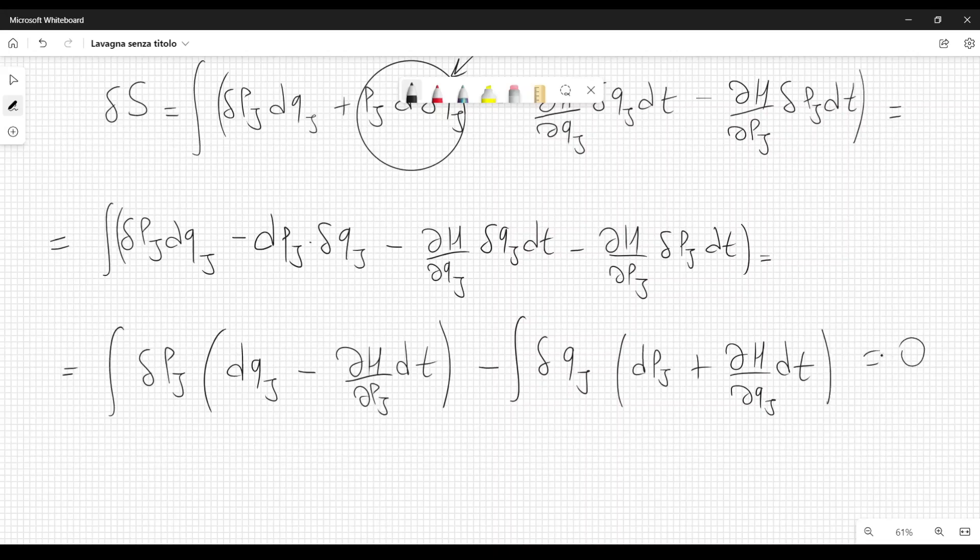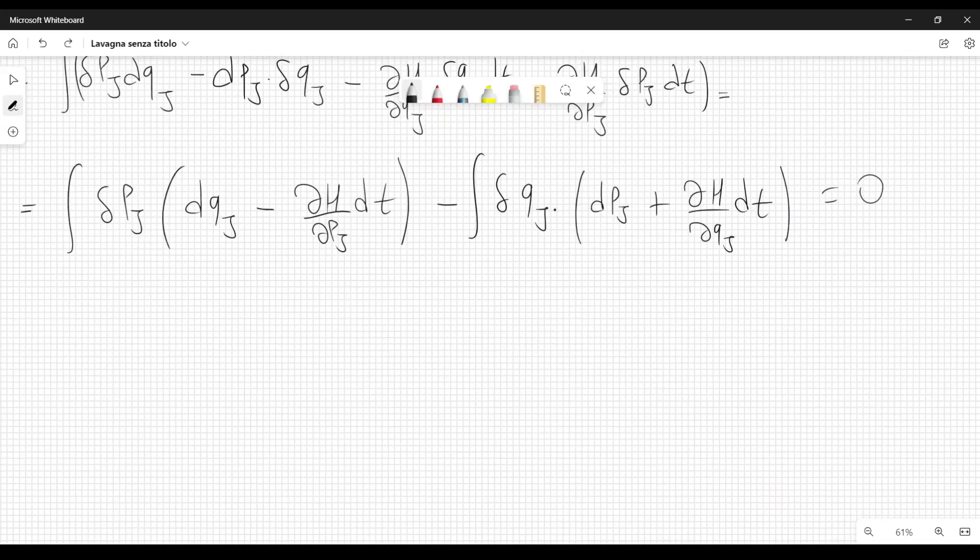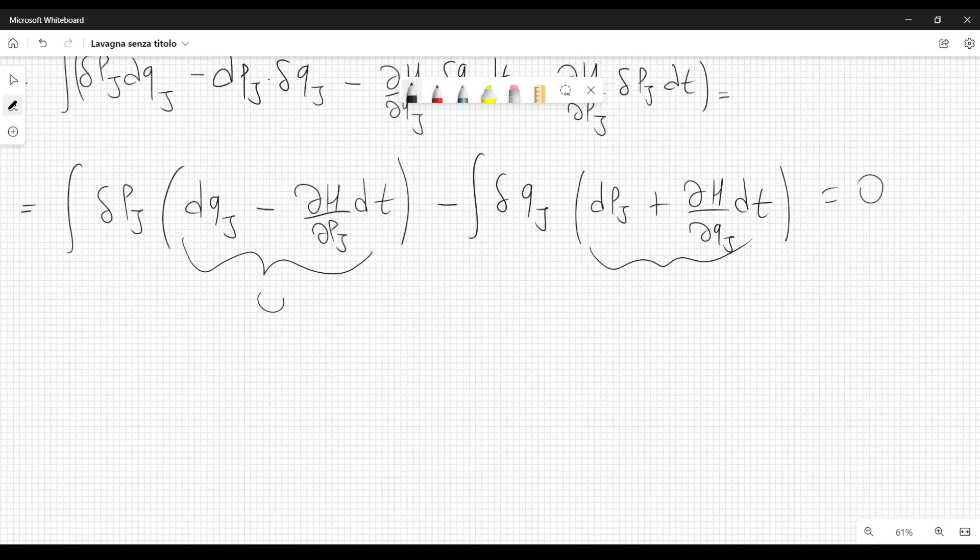And this should be equal to zero. Now, since the variations of the positions and the momenta are independent, and this difference here should be equal to zero, it means that this one and this one should be equal to zero, both of them, because of the independence and the arbitrariness of these variations.